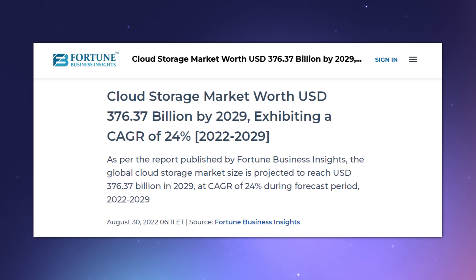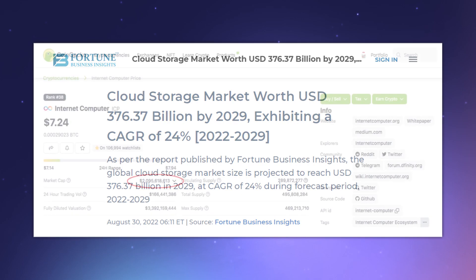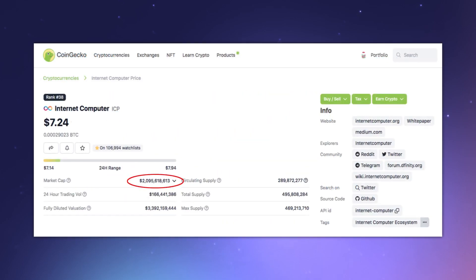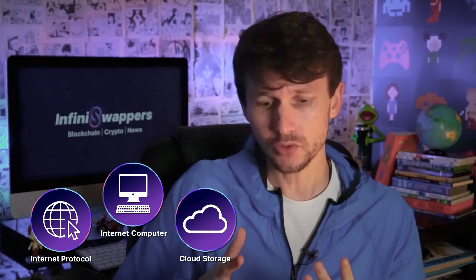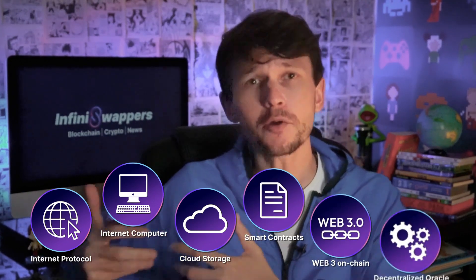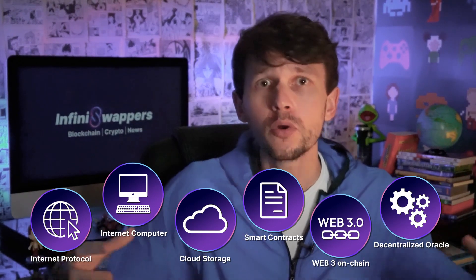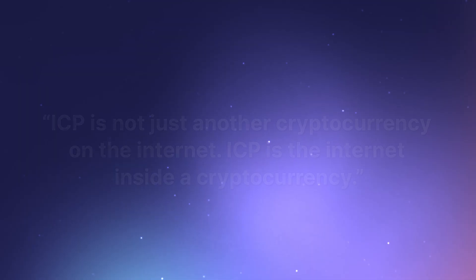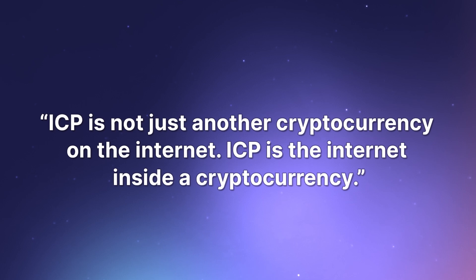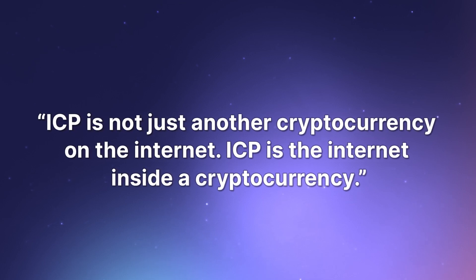We are talking about the market of cloud storage — a market that is expected to grow to a value of almost $380 billion by 2030. Meanwhile, ICP's market value today is only just $2 billion. And remember: ICP is a new internet protocol, it's a computer inside the internet, it's a decentralized cloud storage. But ICP also has smart contracts, Web3 on-chain, and it's also a decentralized oracle. So ICP has several resources within the same blockchain. And that's why I usually say: ICP is not just another cryptocurrency on the internet — ICP is the internet inside a cryptocurrency.